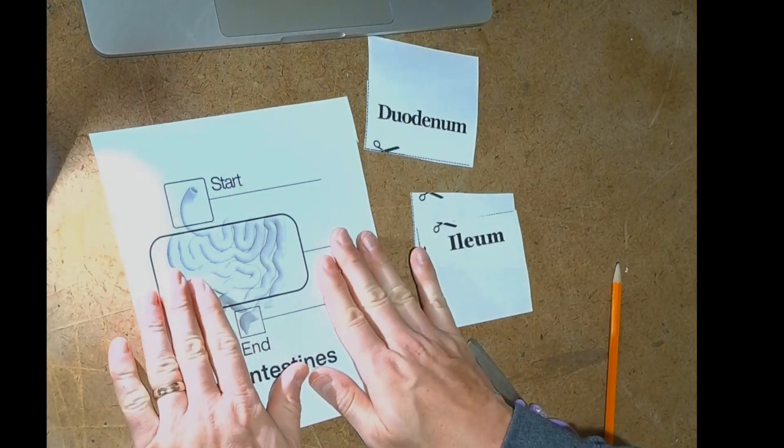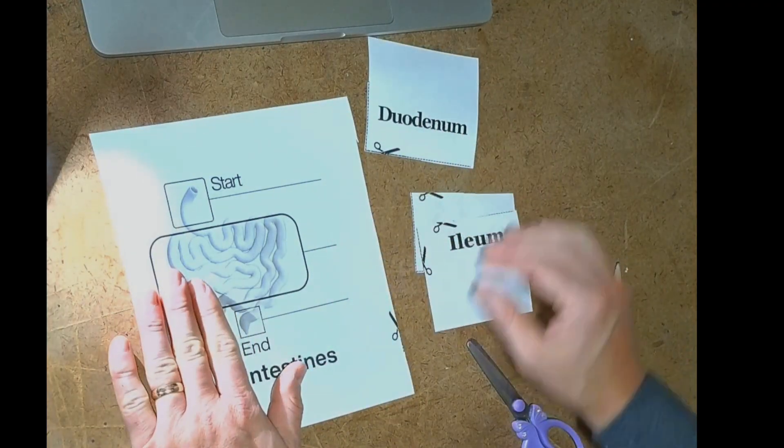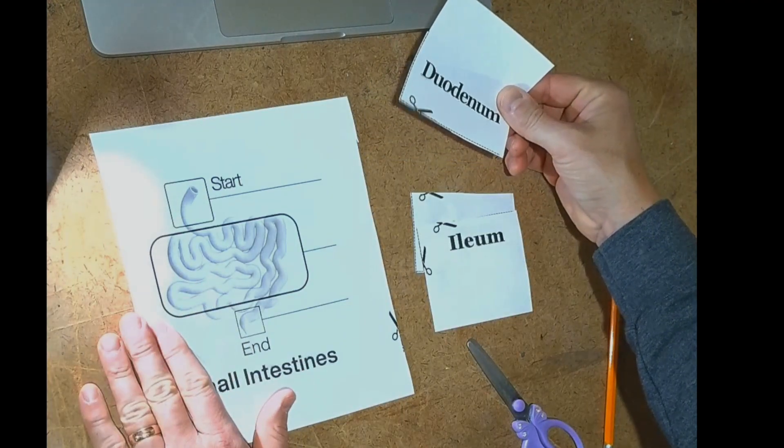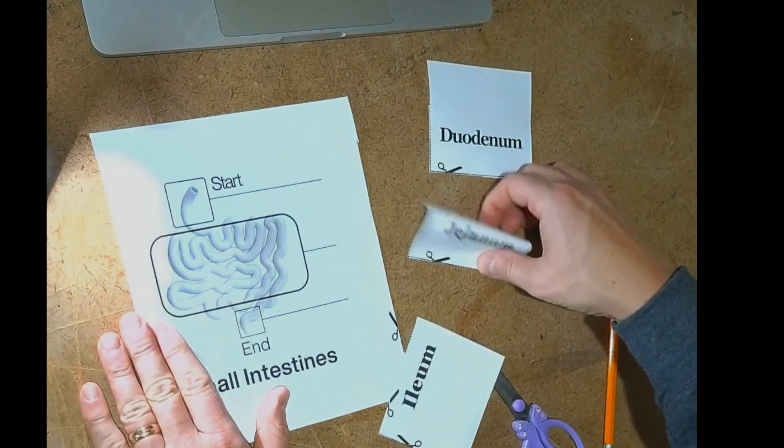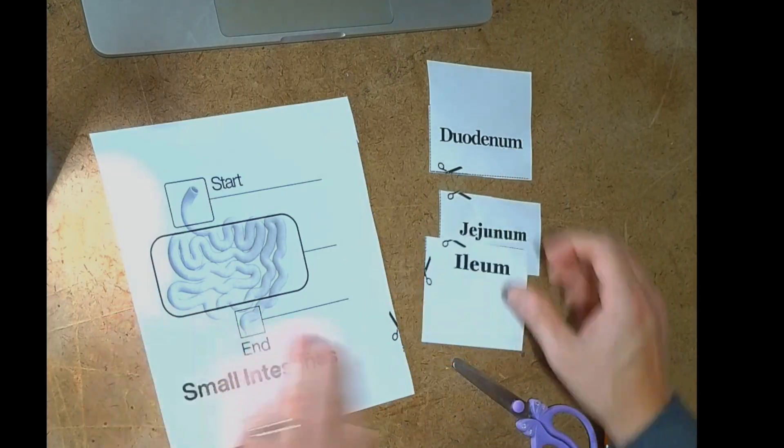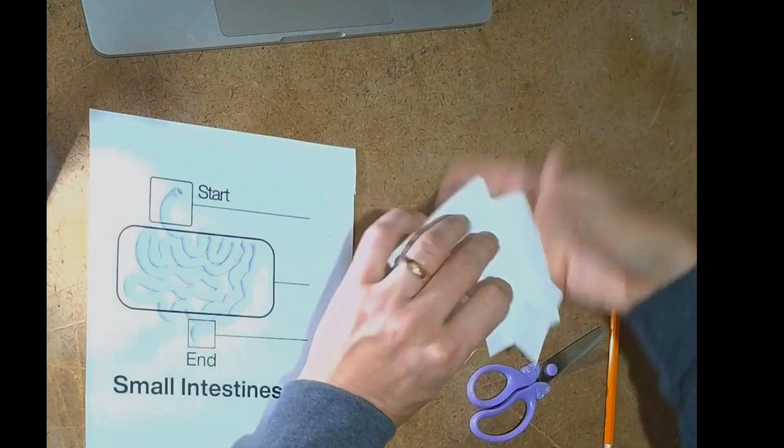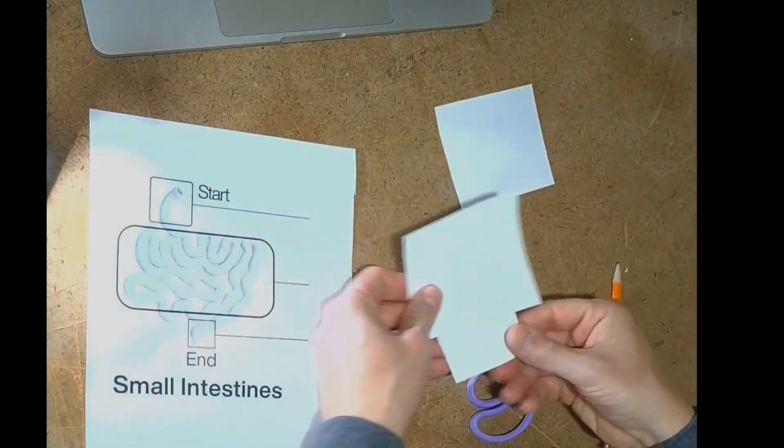We're going to go ahead and we're going to take this and we're going to match everything up. Got duodenum first, jejunum second, and ileum last. Let's mix them up and let's even turn them upside down.